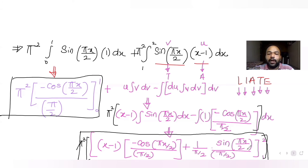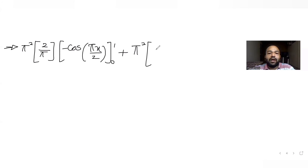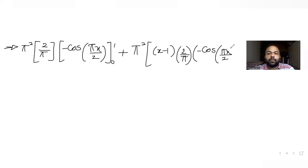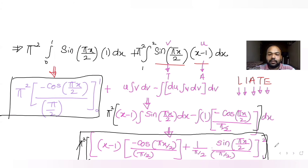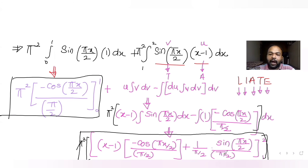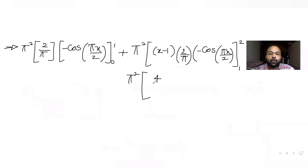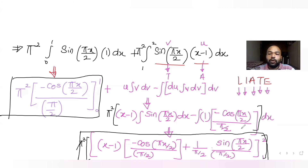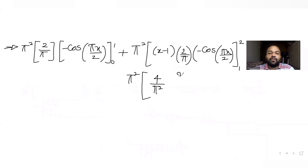For the second part, we have π² times (x minus 1) times (2/π) times (−cos(πx/2)) evaluated from 1 to 2, plus π² times (4/π²) times sin(πx/2) evaluated from 1 to 2.